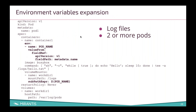Environment variables expansion. Sometimes you have a situation where you want to create a directory or do something related to the pod name — for example, you're saving log files or doing something else that requires separate stuff per pod. Now in beta you can define environment variables and use them as a subpath when mounting volumes. You've got your mount path and then you can create a subpath that uses these environment variables — very handy for log files and other pod-specific things.